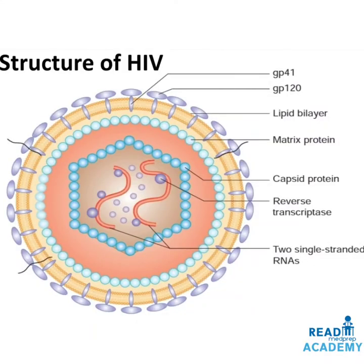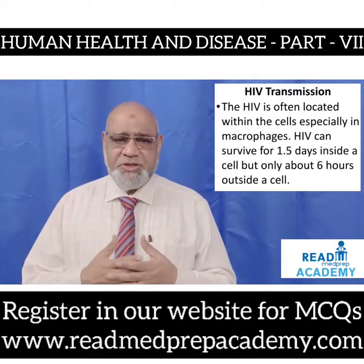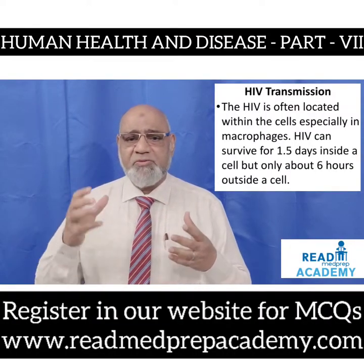The structure of HIV shows two single-stranded RNAs in the center with molecules of reverse transcriptase. Around that is the capsid protein, and outside is a layer of matrix protein, followed by a lipid bilayer which has GP41 spikes and GP120 spikes. HIV is often located within cells, especially in macrophages. HIV can survive for 1.5 days inside a cell but only about six hours outside a cell.